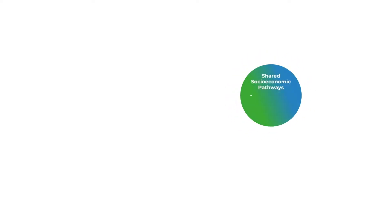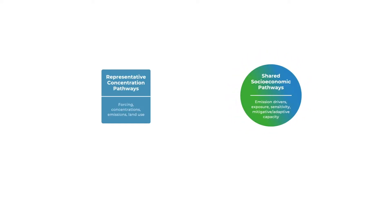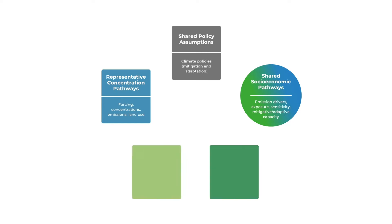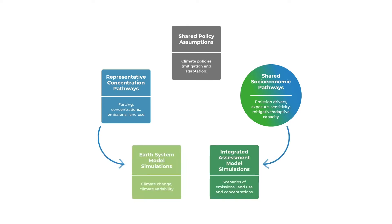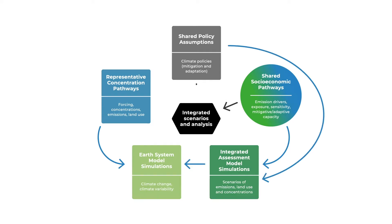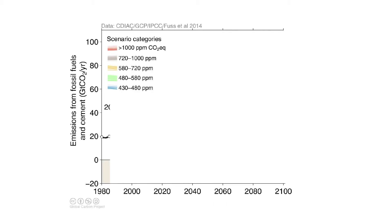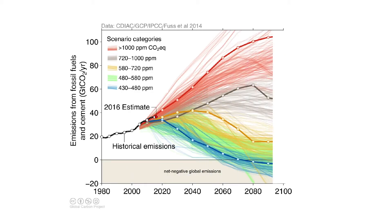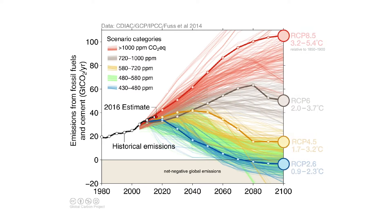Instead, they are designed to be coupled with a set of future climate scenarios known as the Representative Concentration Pathways, or RCPs. The SSPs and RCPs can be used together to assess climate change risks and vulnerabilities, and provide the challenging context within which future decisions on climate mitigation and adaptation must be developed and implemented.